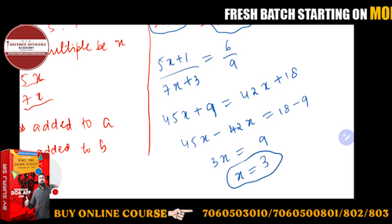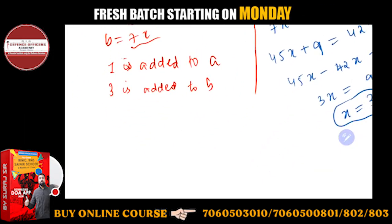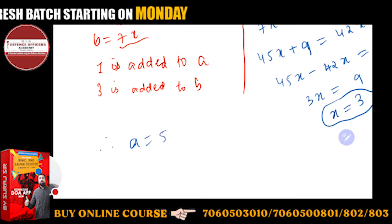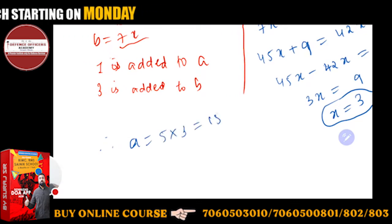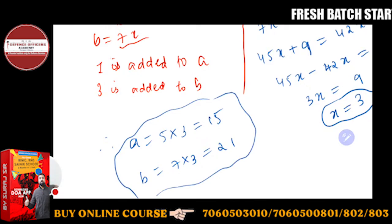x is 3. If you will put the value, you will get the values of a and b. So therefore, a is 5x, so 5 into 3, that is 15. And b is 7 into 3, which is 21. So these are the answers. Simple.